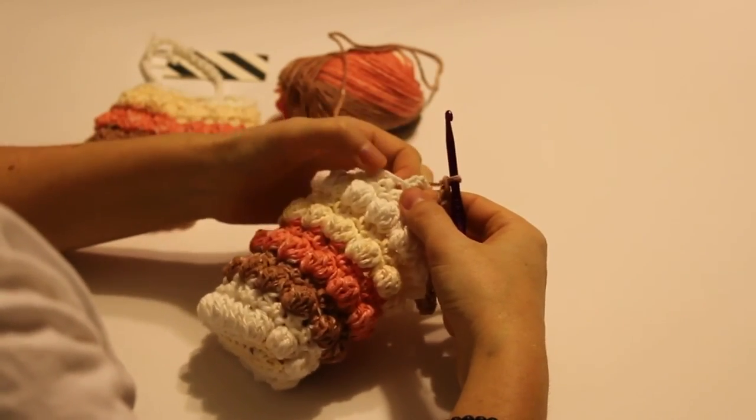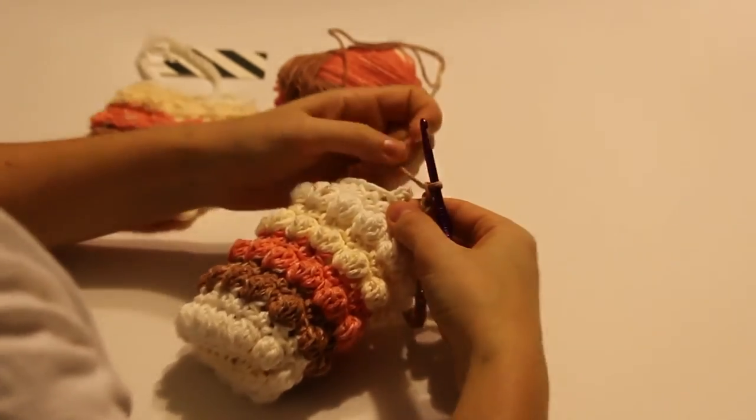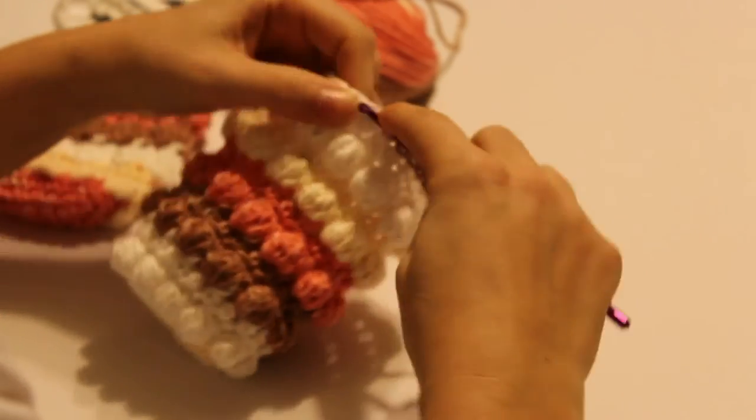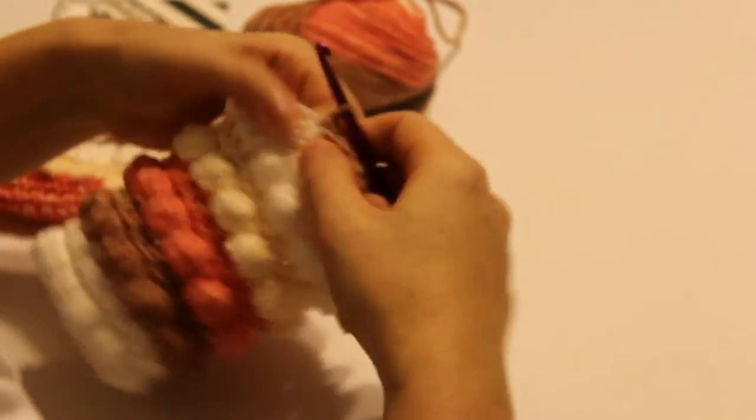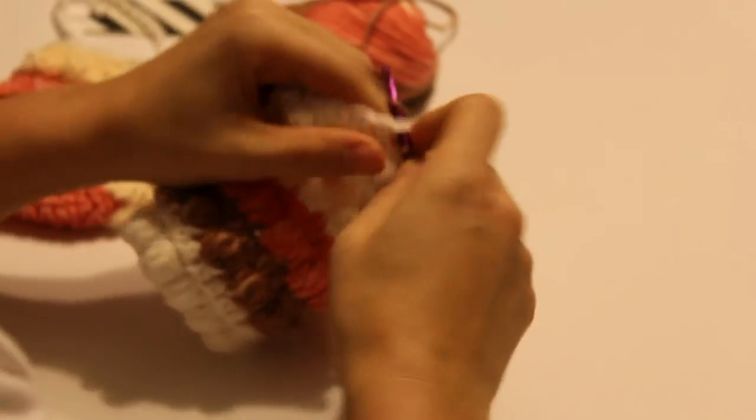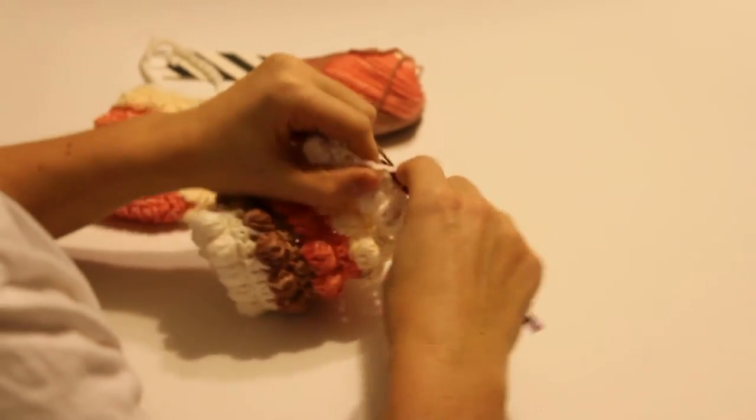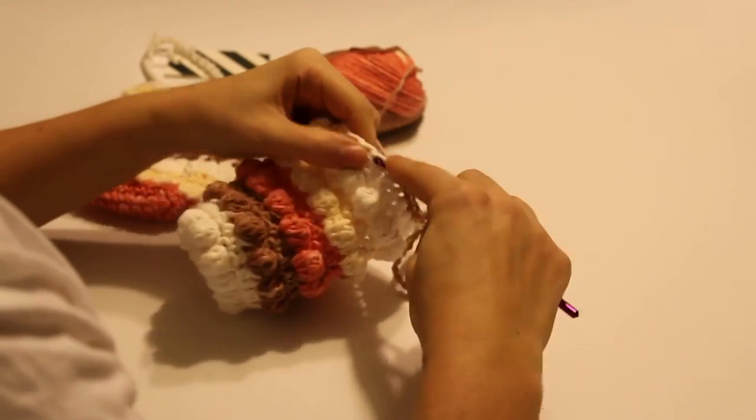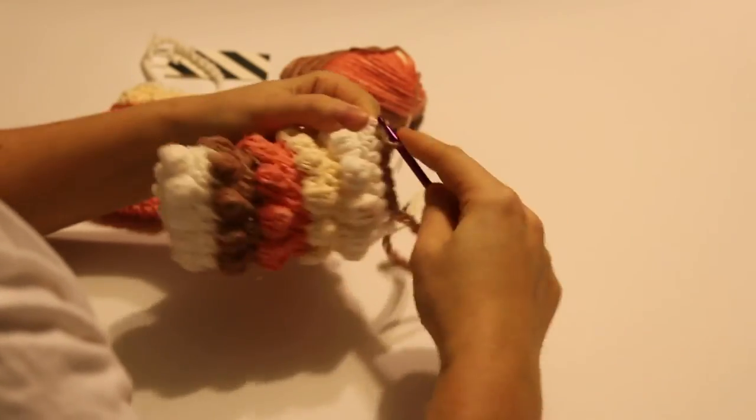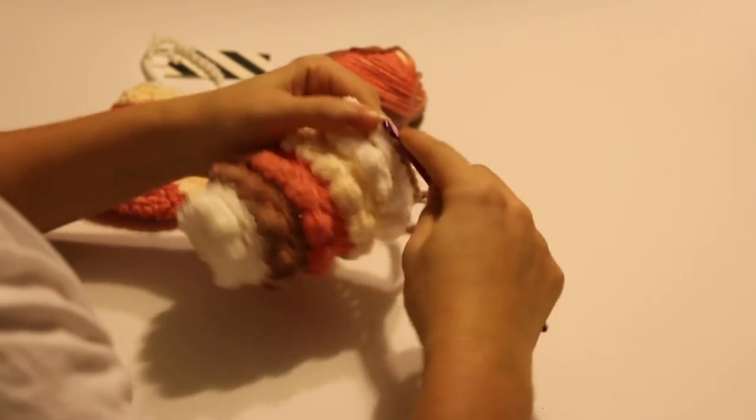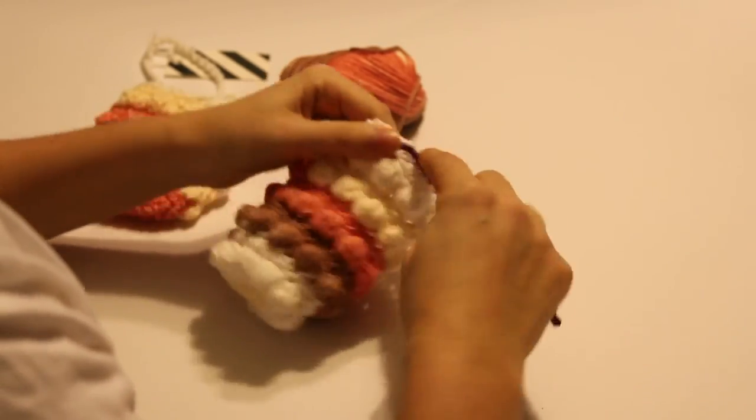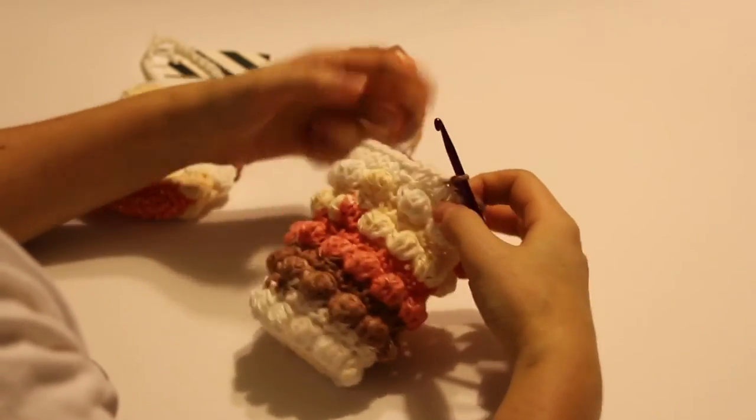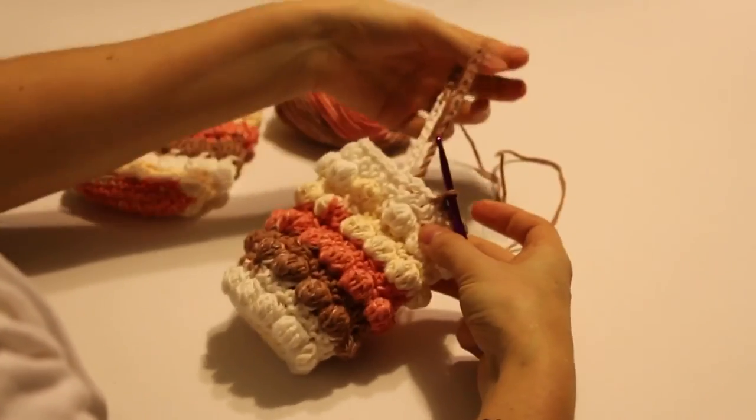So now into the 12th half double crochet you will make a slip stitch and you are going to continue slip stitching all the way around to the beginning. So that means 11 more slip stitches total and your last slip stitch will be in the last half double crochet and then you will fasten off and weave in your ends and then you will be done and you will have your soap saver. So it's as simple as that.